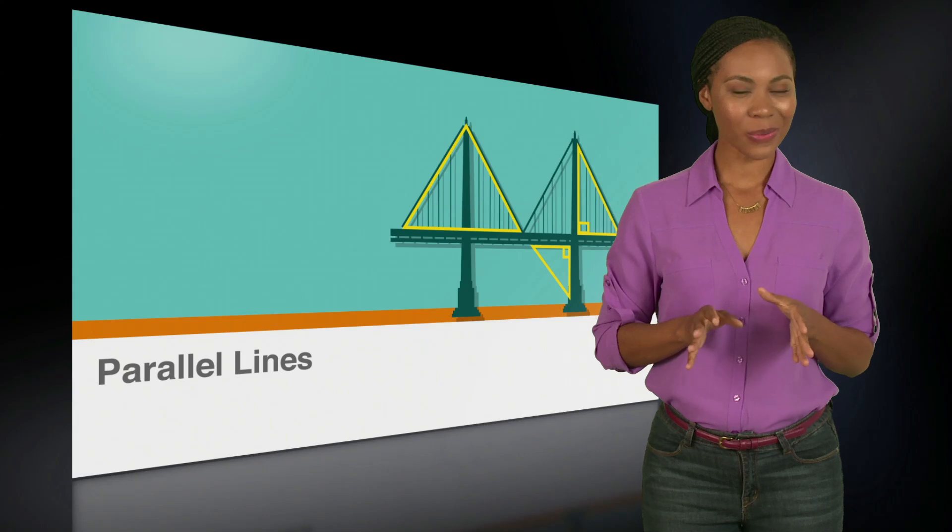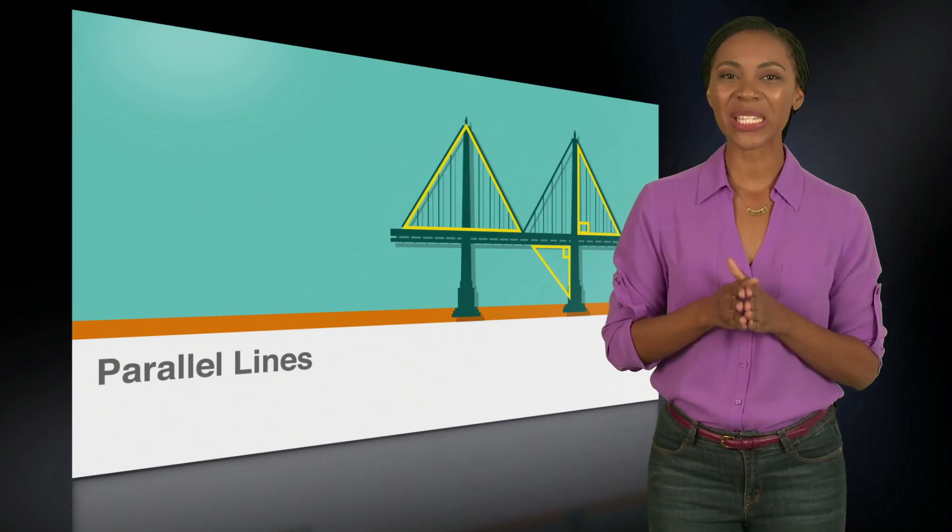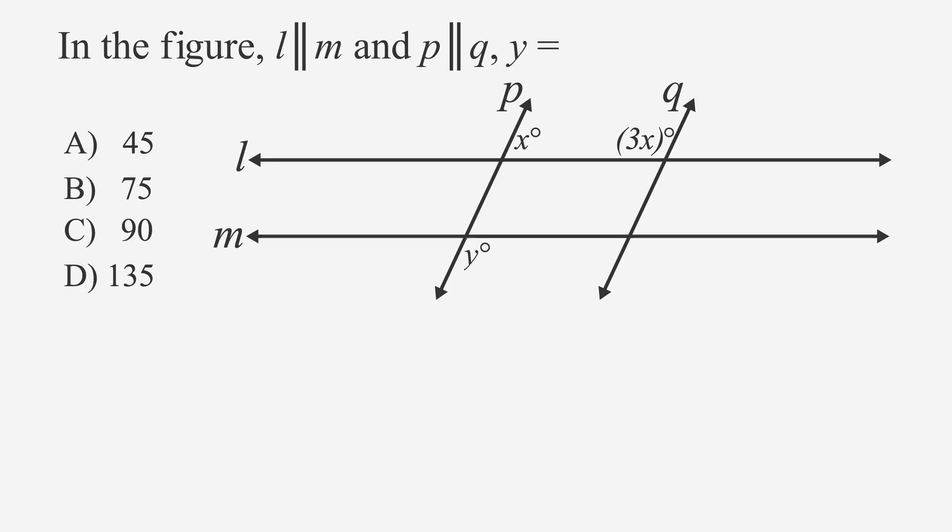It works just as well if you're working with 2 transversals. Let's try this out on a problem similar to what you can expect on the test. In the figure, line L is parallel to line M, and line P is parallel to line Q. Y equals,